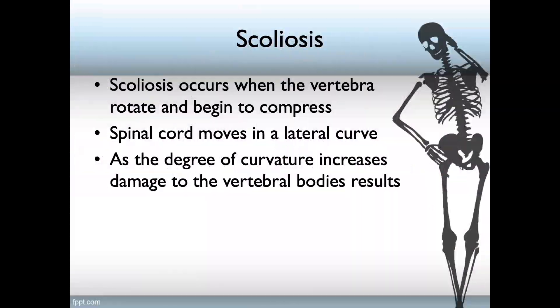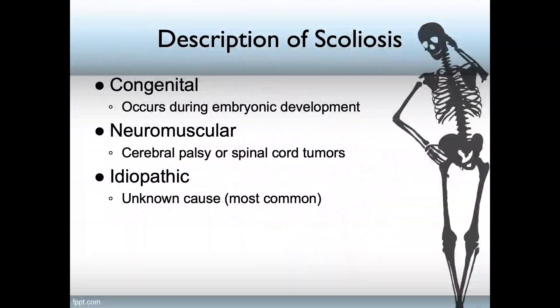Scoliosis is one of the curvatures of the vertebrae. Scoliosis occurs when the vertebrae rotate and begin to compress. The spinal cord moves laterally. As the degree of curvature increases, damage to the vertebral body results. There are three types: congenital, which occurred during embryonic development; neuromuscular, such as cerebral palsy or spinal cord tumors, which cause weakening of the supporting muscles; but the most common cause is unknown, or idiopathic.